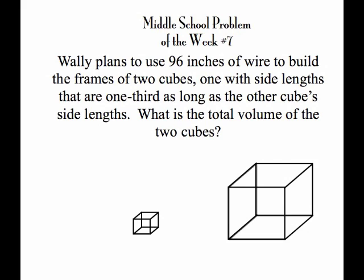In this week's problem of the week, Wally plans to use 96 inches of wire to build the frames of two cubes, one with side lengths that are one-third as long as the other cube's side lengths. Our job is to find the total volume of the two cubes.